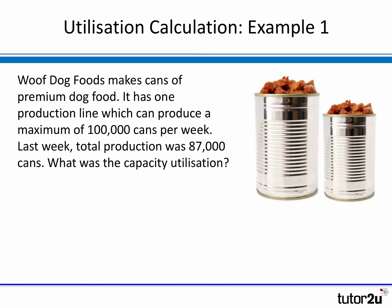Let's look at two or three examples of this calculation in action so you can see the different ways capacity utilization can be asked. We've got a small case study — a manufacturer of dog food. Woof Dog Foods has one production line and can make a maximum of 100,000 cans of dog food per week. That's our measure of capacity: the potential output over a specified period. Last week, total actual production was 87,000 cans. The first question is: what was the capacity utilization?